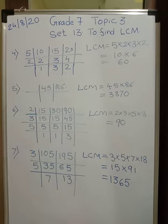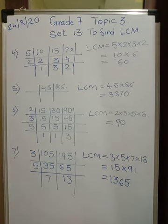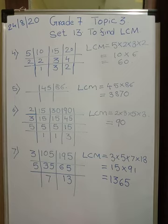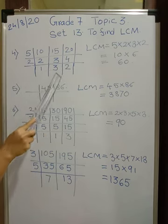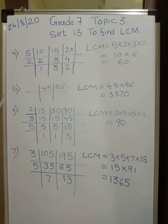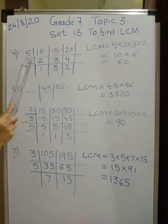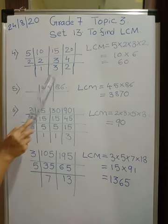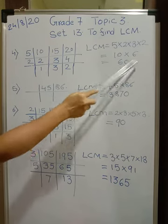To summarize the rule for 3 numbers: first choose a number dividing all 3 at once; if not possible, choose one dividing at least 2 at a time; if neither is possible, stop. Here I chose 2 dividing both 2 and 4, giving 1, 3, and 2. The LCM equals the first column multiplied by the last row: 5 × 2 × 1 × 3 × 2 = 10 × 6 = 60.